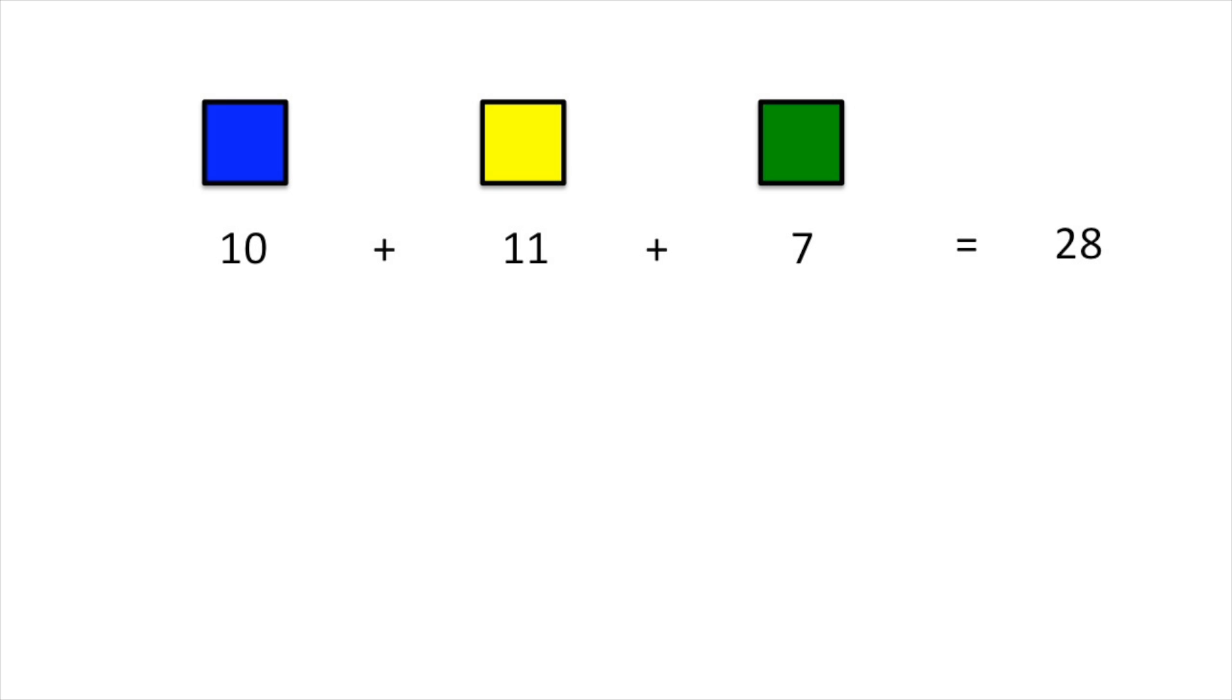In general, if the color which is least used has more than n over three corners, then there are more than n over three blues, n over three yellows, and n over three greens, totaling more than n corners, a contradiction.